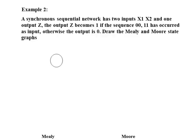In the same way, we start with the initial state S0. When the network receives input 0, 0, the output is 0. And now when the network receives 1, 1, the output will change to 1, because the sequence 0, 0, 1, 1 has occurred as input.